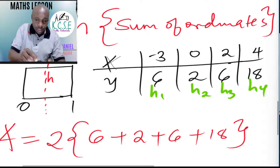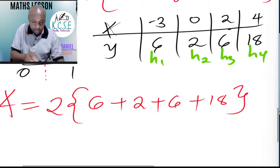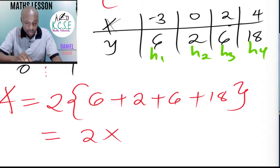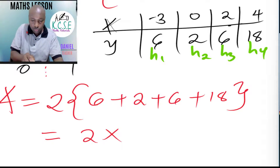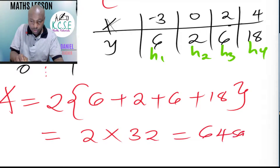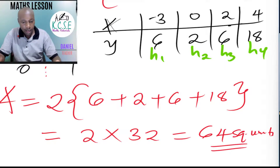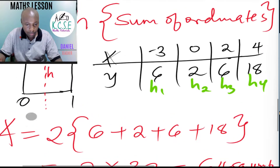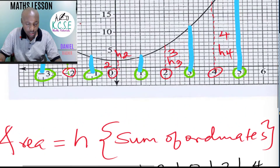Working out the calculation: area equals two multiplied by the sum of the ordinates. Six plus two plus six plus eighteen equals thirty-two, and two multiplied by thirty-two gives sixty-four square units as the area under the curve using the mid ordinate rule.